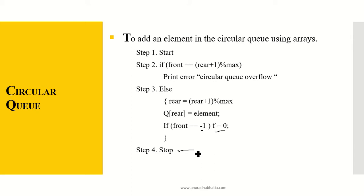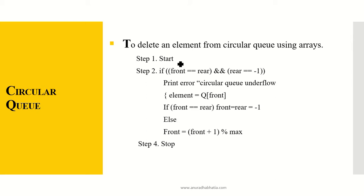To delete an element from a circular queue: start — if front equals rear and rear equals minus 1, print circular queue underflow. This is the underflow situation when deleting; overflow occurs when adding. Otherwise, element = q[front]. If front equals rear, set front = rear = minus 1. Else front = (front + 1) mod max. Then stop.